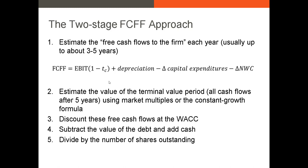After estimating your free cash flows over the next three to five years in the forecasting period, the next step is to estimate the terminal value period cash flow. There are two ways: you can use market multiples, or you can use a constant growth formula — the Gordon growth model, also called the DDM formula. Then in step three, you discount all your free cash flows at the weighted average cost of capital, which represents the overall cost of raising the next dollar of capital for the entire firm.